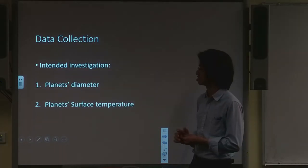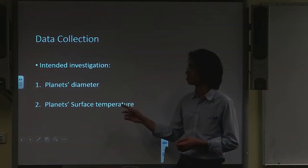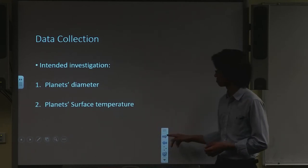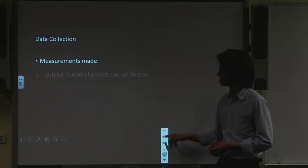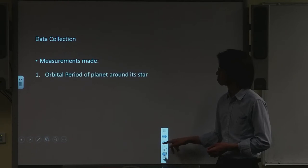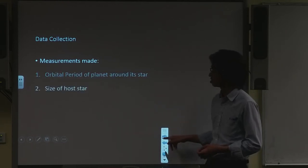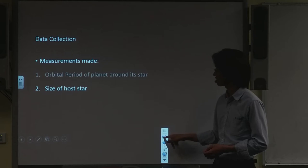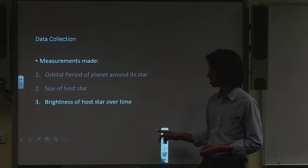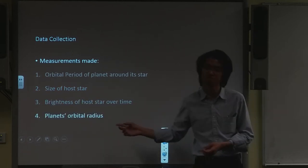The Kepler telescope intends to investigate planet's diameter and surface temperature. So the measurements made are the orbital period of the planet, size of its host star, brightness of its host star over time, and planet's orbital radius.